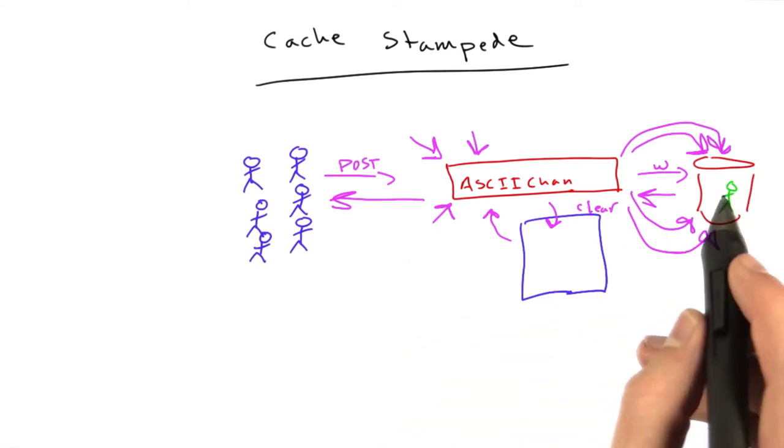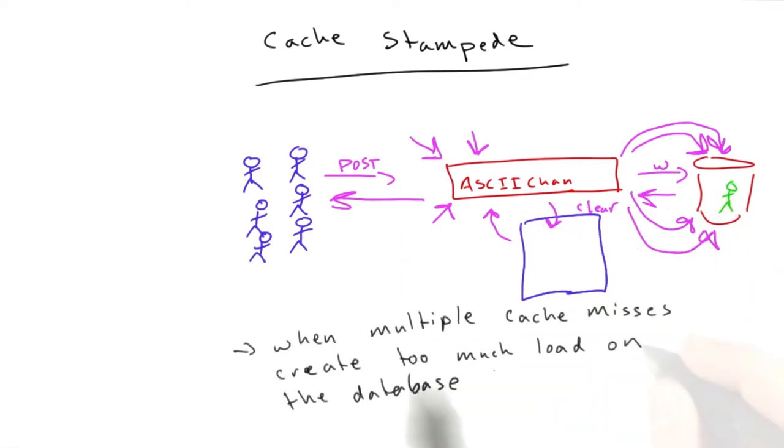but the solution is fairly simple. So a cache stampede is when multiple cache misses from so much traffic create too much load on the database, or not necessarily a database, but whatever slow computation you've got going on that you don't want to do very many of, that you're constrained for resources to compute.